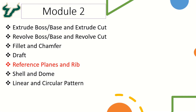Hello everyone. In this video we will be looking at how to create a rib feature. The rib feature is used to provide support to a solid model. Before we learn how to create a rib feature, it is important to know how to create the reference plane that is sometimes used in the creation of rib features, or for any other feature that requires the creation of non-standard planes.